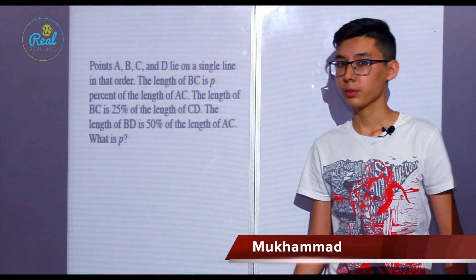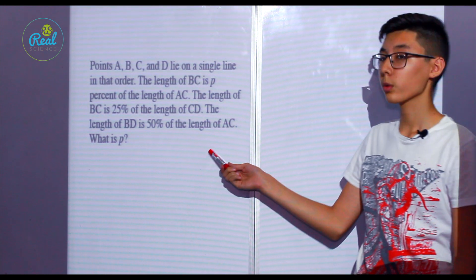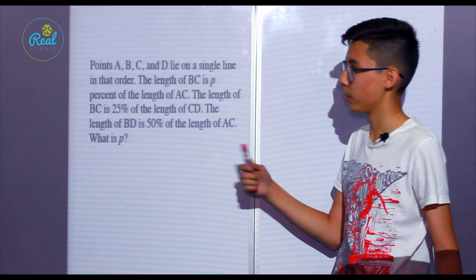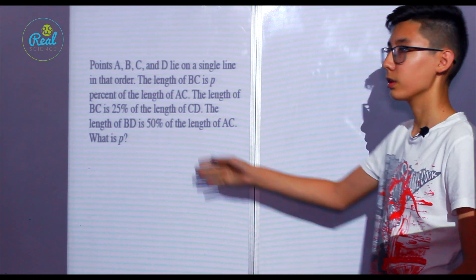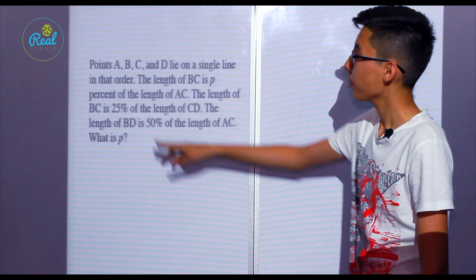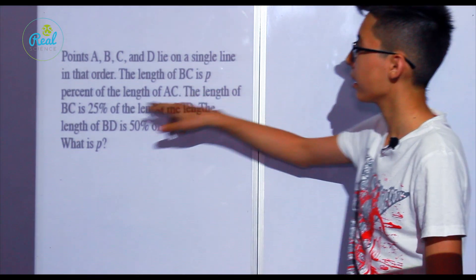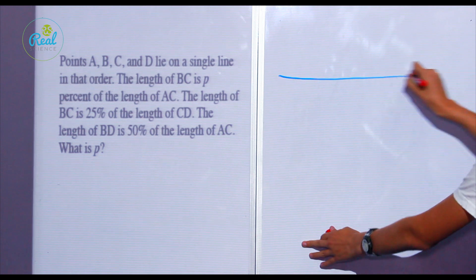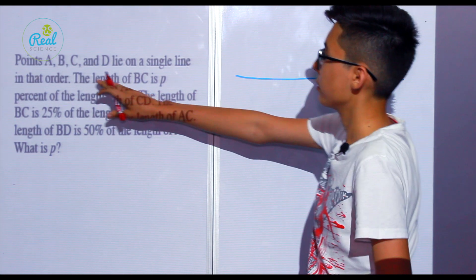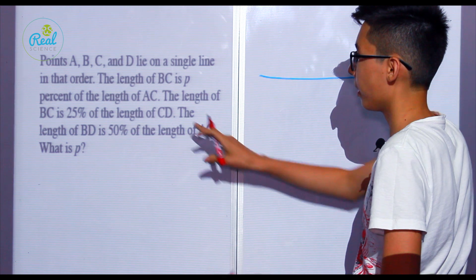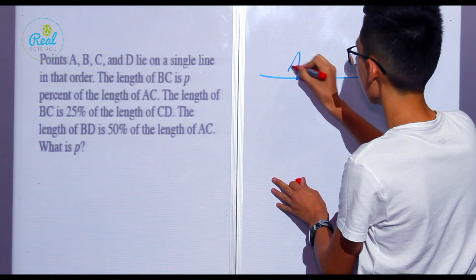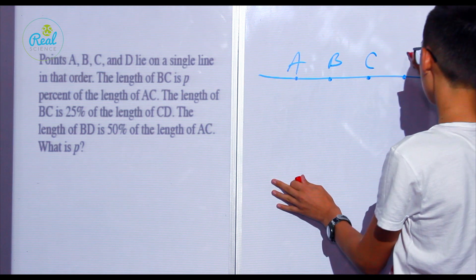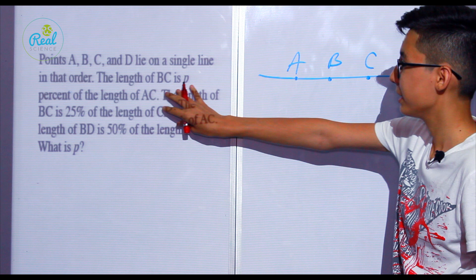I'm glad to see you again. I'm Muhammad, and now I'll solve this new mathematical issue which we haven't seen before. First of all, we have to read the information given: points A, B, C, and D lie on a single line in that order. It means we have a single line and the order of these four points is A, B, C, and D.